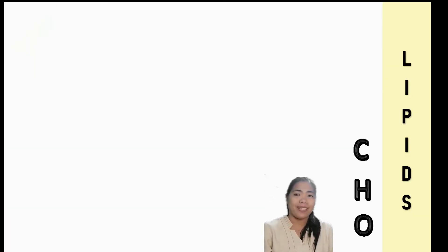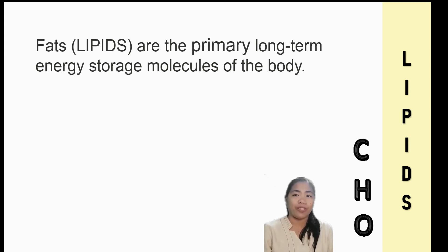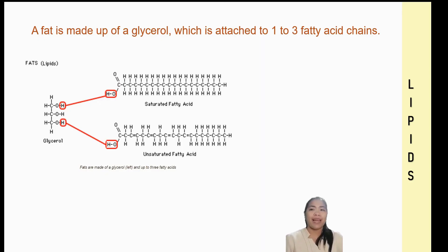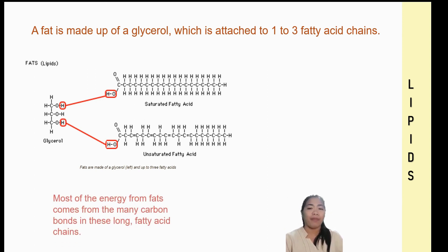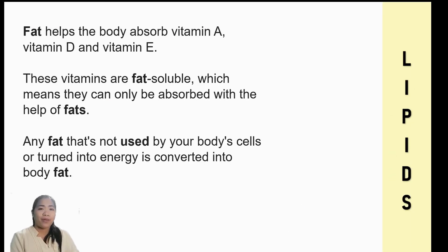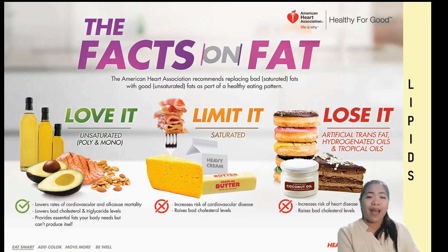Fats or lipids are the primary long-term energy storage molecules of the body. They are very compact and lightweight, making them an efficient way to store excess energy. Lipids are made up of glycerol attached to fatty acids. Most of the energy from fats comes from the many carbons in the long fatty acid chain. Fat helps the body absorb vitamin A, vitamin D, and vitamin E — these vitamins are fat-soluble, meaning they can only be absorbed with the help of fats. Any fat not used by your body's cells or turned into energy is converted into body fat. Let us be guided by the image shown: the facts on fat.